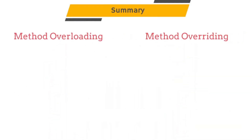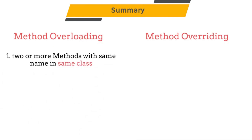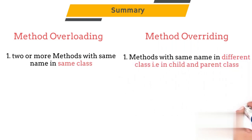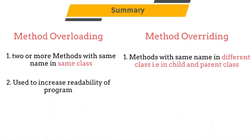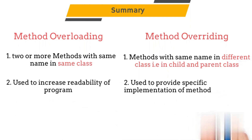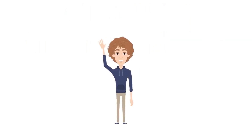To summarize: method overloading means creating two or more methods with the same name in the same class; method overriding means creating methods with the same name in a parent and child class. Method overloading is used to increase readability of a program; method overriding is used to provide a specific implementation of a method. That's it for today's video — if you like this video please subscribe to my channel. Thank you so much for watching.